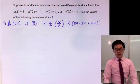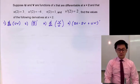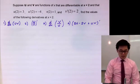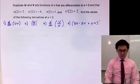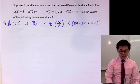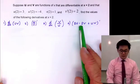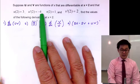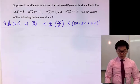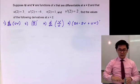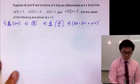Today we're going to be working on the use of the derivative rules in finding the derivative of some special functions. In this particular problem, suppose u and v are functions of x that are differentiable at x equal to 2. We're going to find the derivatives of problems number 1 through 4, given that u(2) = 3, u'(2) = -4, and so on. To apply the derivative rules, we're just going to be working on their notation.